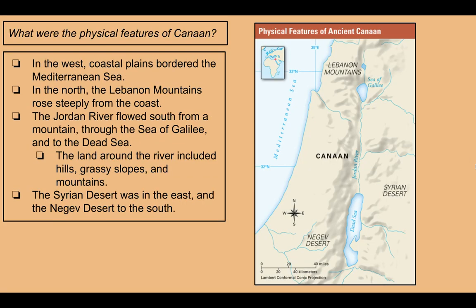What were the physical features of Canaan? In the west, there were coastal plains that bordered the Mediterranean Sea — flatlands good for growing crops. In the north, the Lebanon Mountains rose steeply from the coast. The Jordan River flowed south from a mountain in the Lebanon Mountains, through the Sea of Galilee, down to the Dead Sea. The land around the river included hills, grassy slopes, and mountains. The Syrian desert was in the east and the Negev desert in the south — the Negev receives more rain than a typical desert.